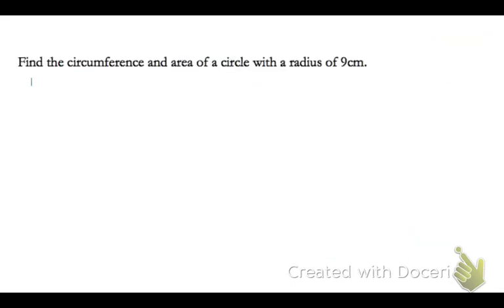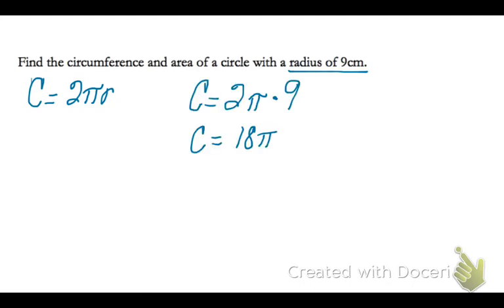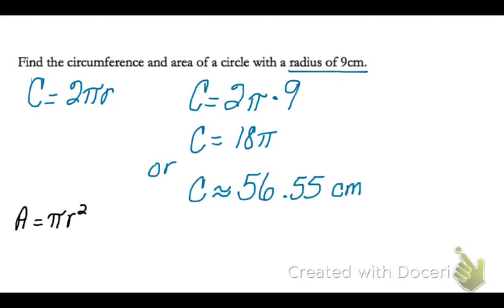Let's find the circumference and area of a circle with a radius of 9 centimeters. Since we're given the radius, we're going to use the formula circumference equals 2 times pi times the radius. We're going to replace the radius with 9, and we get that our circumference is 18 pi. If your homework asks you to answer in terms of pi, this is what you would write: 18 pi. If it asks for a decimal, you are going to round to however many places it asks you to. I rounded it to two decimal places, and I get that the circumference is approximately 56.55 centimeters.